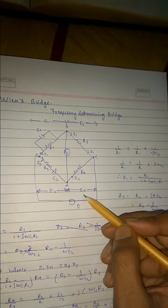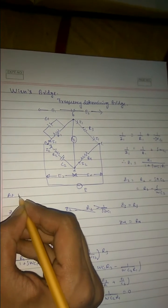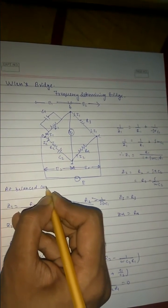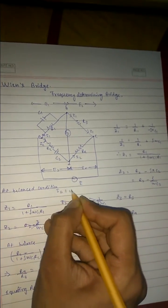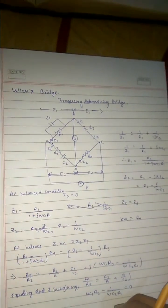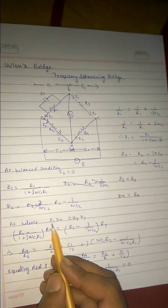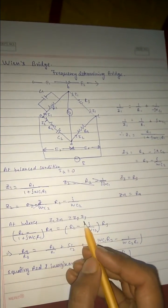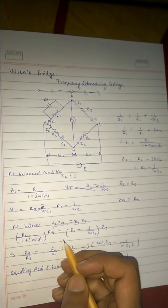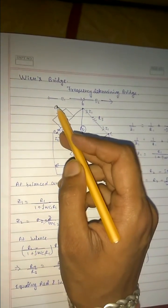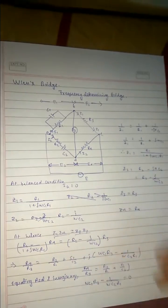So at balanced condition, that is ig equals to zero, there is no deflection condition. So what will be the case? The case will be z1·z4 equals to z2·z3. That is e1 equals to e2, e1 equals to e2, and e3 equals to e4.